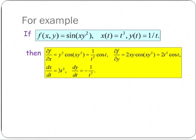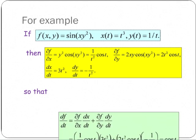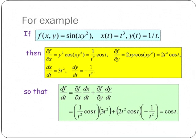dx dt is 3t squared and dy dt is minus 1 over t squared. So df dt is df dx · dx dt plus df dy · dy dt, which is (1 over t squared) cos t times 3t squared, plus 2t squared cos t times minus 1 over t squared, which equals cos t.